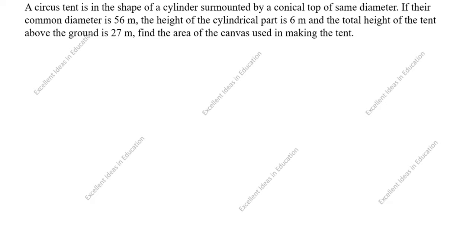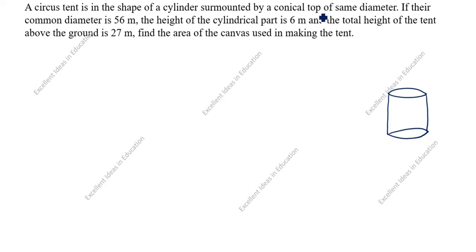Hi friends, welcome to my channel 'Excellent Ideas in Education.' Today we are going to solve a surface areas and volume problem. This is a board exam 2017 question. A circus tent is in the shape of a cylinder surmounted by a conical top of the same diameter. We will draw the cylinder surmounted by a conical top of the same diameter.